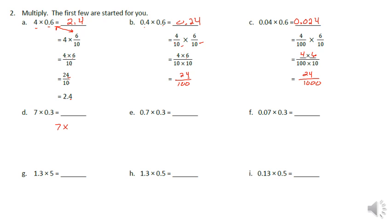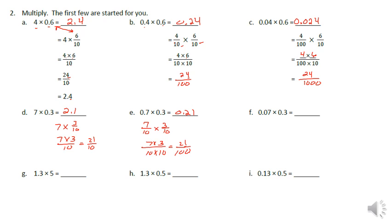For part d: 7 times 3 tenths, written as a fraction gives 7 times 3 over 10, which equals 21 tenths. The 1 is in the tenths place, so the answer is 2.1. For part e: 7 tenths times 3 tenths gives 7 times 3 over 10 times 10, which equals 21 hundredths — the 1 is in the hundredths place, so 0.21. For part f: that becomes 21 thousandths, with the 1 in the thousandths position, giving 0.021.